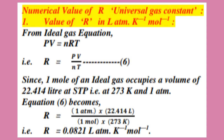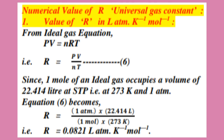So the value of pressure is 1 atmosphere and volume is 22.414 liters, divided by n equals 1 mole, since the gas occupies 22.414 liters at STP, and temperature equals 273 Kelvin. After simplification, R equals 0.0821 liter atmosphere per Kelvin per mole.